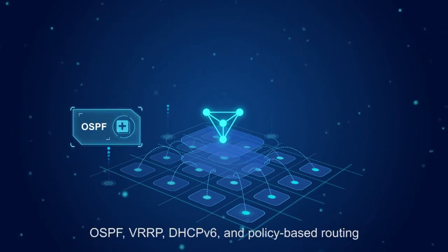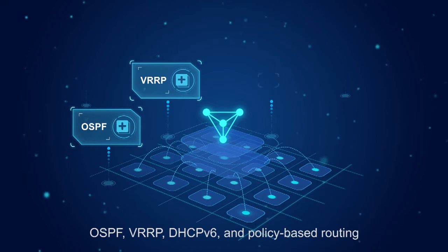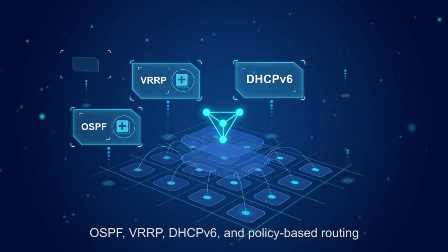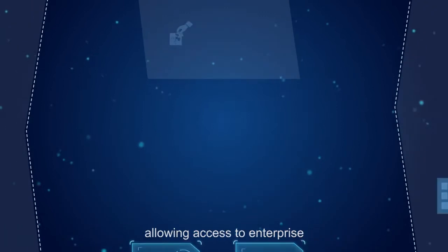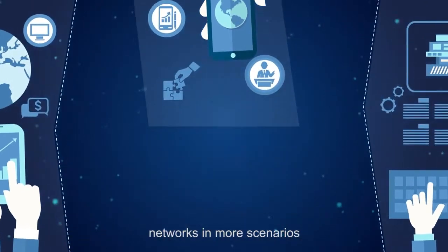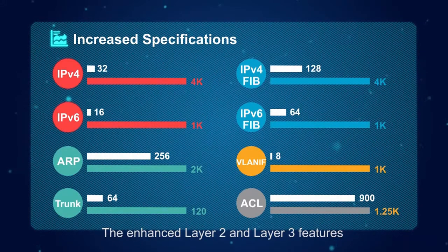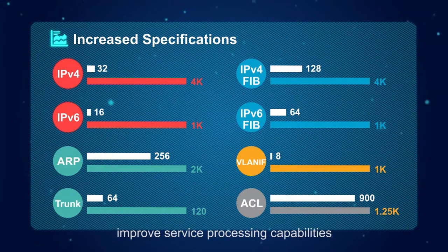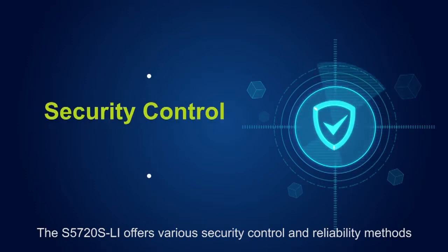Layer 2 and Layer 3 capabilities are improved tenfold. The S5720S-LI adds support for Layer 3 features such as OSPF, VRRP, DHCP version 6, and policy-based routing, allowing access to enterprise networks and more scenarios. The enhanced Layer 2 and Layer 3 features improve service processing capabilities.